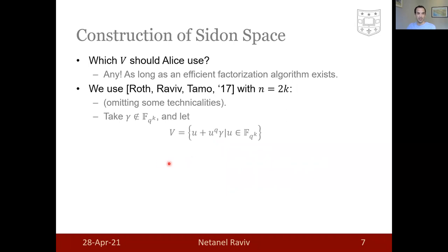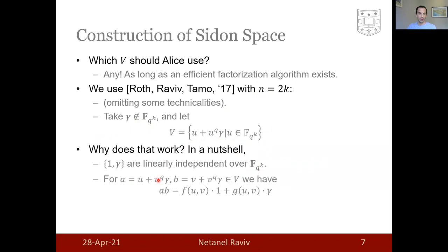The construction is as follows. Take any gamma which does not lie in the intermediate field F_q^k, where n equals 2k, and take the simple construction of all elements of the form u plus u^q gamma, where u is in the intermediate field. In a nutshell, this works since 1 and gamma are linearly independent over the intermediate field. And therefore, the product of two elements from this V, which have this form for some u and v in the intermediate field, can be described as a linear combination of 1 and gamma. The coefficients in these linear combinations are from the intermediate field and can be rather easily extracted. This gives us an efficient factorization algorithm for products in Sidon spaces V that were constructed according to our construction.